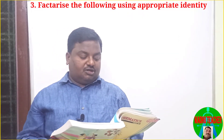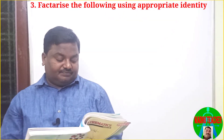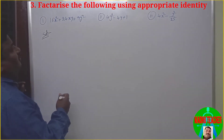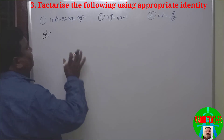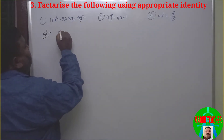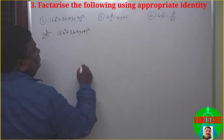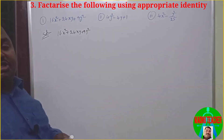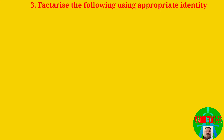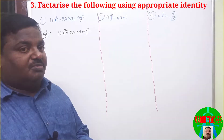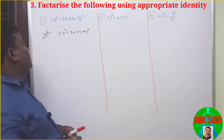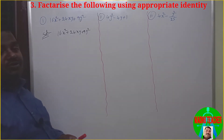Third bit is to factorize the following using appropriate identities. You have to factorize these using only identities. First, change into identity form.